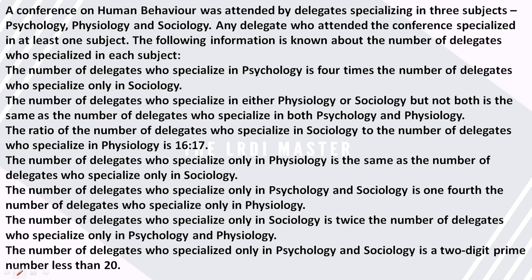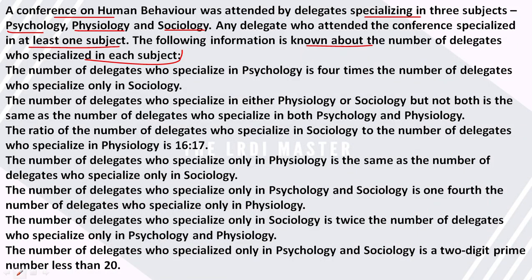Hi everyone. In this video we will understand how we can solve this type of set. In this set we are given that a conference on human behavior was attended by delegates specializing in three subjects: psychology, physiology, and sociology. Any delegate who attended the conference is specialized in at least one subject. The following information is known about the number of delegates who specialized in each subject. This is a Venn diagram set.